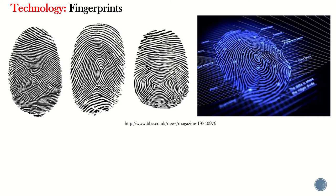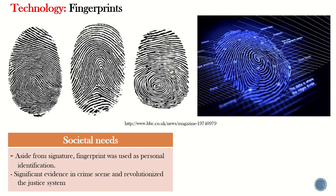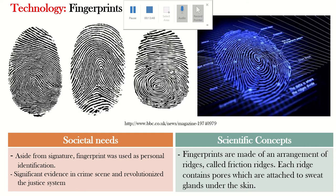Next, fingerprints. The societal need is that, aside from signatures, fingerprints are used as personal identification and significant evidence in crime scenes, revolutionizing the justice system. Scientifically, fingerprints are made up of an arrangement of ridges called friction ridges, and each ridge contains scores attached to sweat glands.